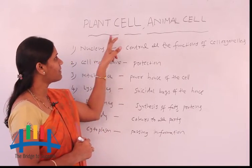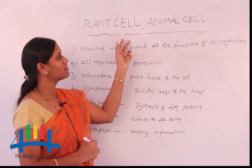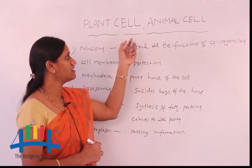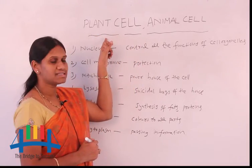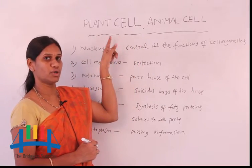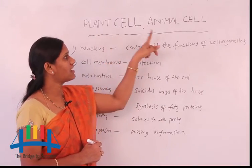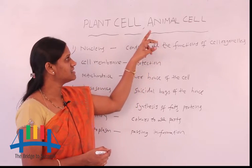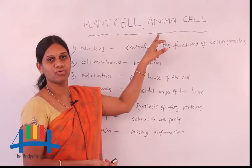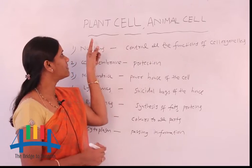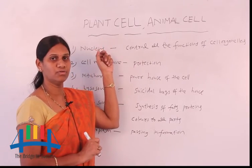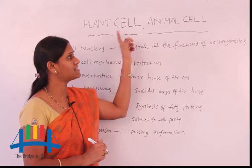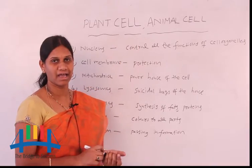First, the difference between plant cell and animal cell. Both are cells, but one difference is there. The plant cell is an example of an autotrophic cell. The animal cell is a heterotrophic cell. That means animal cells can't prepare their own food, but plant cells can prepare their own food. That is the first difference between plant cell and animal cell.